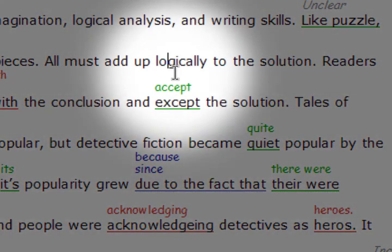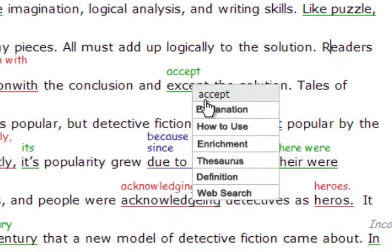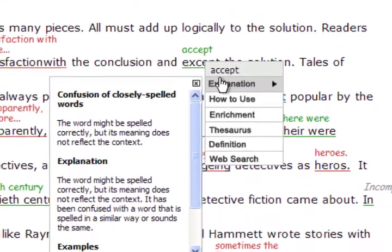For instance, RightClick found a grammar error with the word 'except' in this sentence. RightClick suggests 'accept' as a replacement. To find out why, click on the word 'except' with your right mouse button and scroll down the menu to explanation.